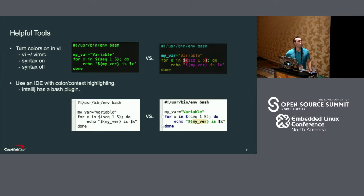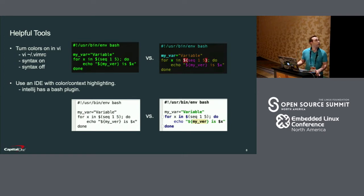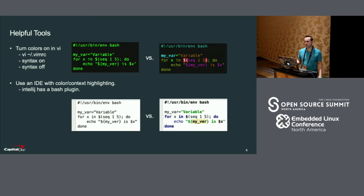There are some helpful tools if you're going to develop bash scripts. It's a lot easier when there's syntax highlighting in your IDE. In Vim, it's easy to get color highlighting of your bash scripts — you just do colon syntax on. And if you want that to always happen, in your vimrc file you just add the word 'syntax on'. Likewise, if you're working with IntelliJ, there's a plugin for bash scripts. You can see the difference — it would be a lot easier developing code with the highlighting.